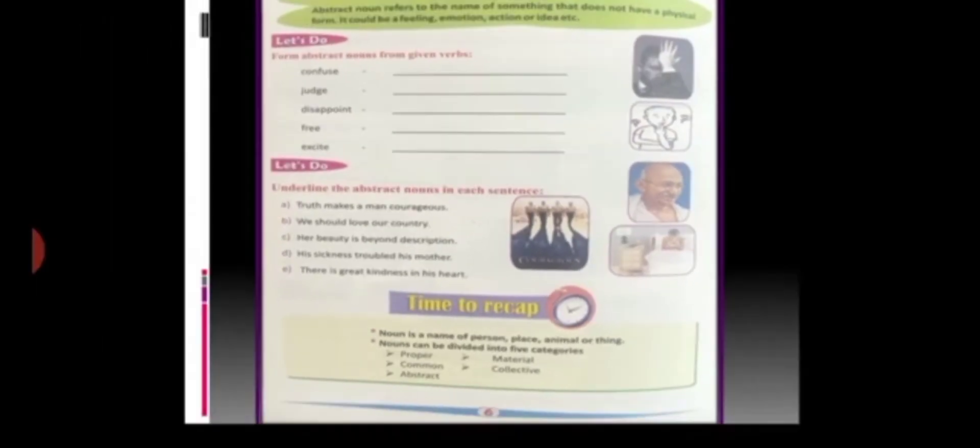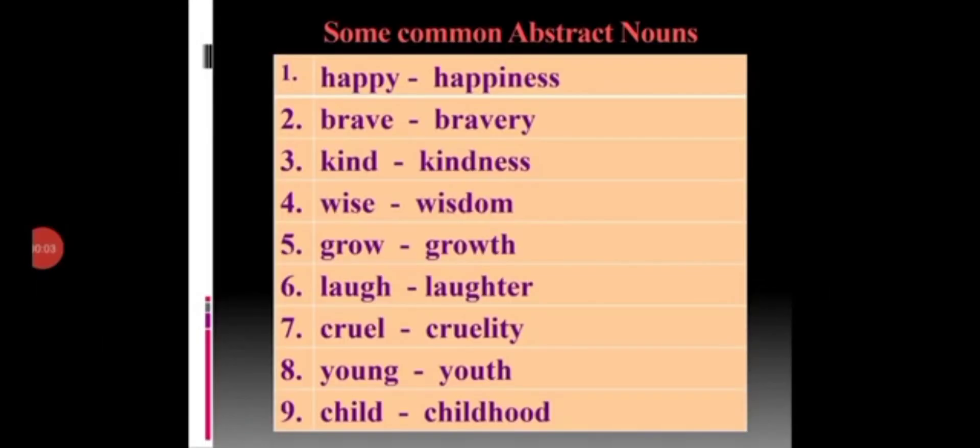I have some more examples for you of abstract noun. Here are some common abstract nouns. Now, all these cannot be seen but they can be felt. So, that's why they all are the abstract nouns. I hope you all must have understood all the five types of nouns.